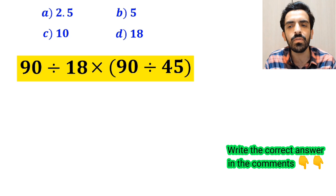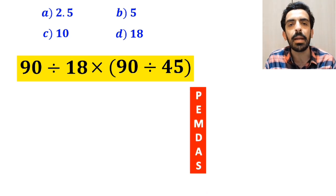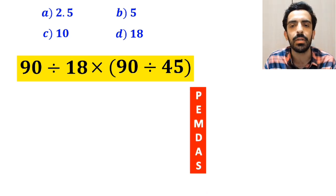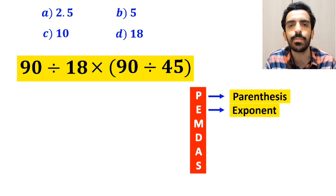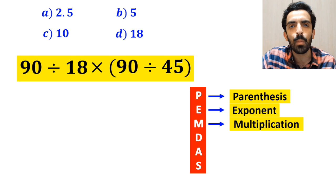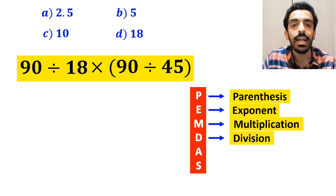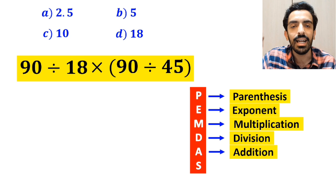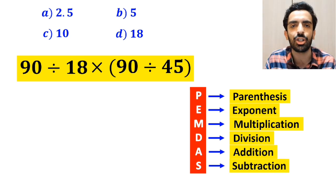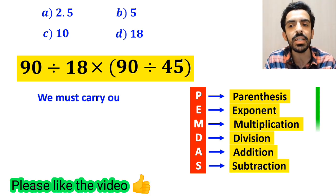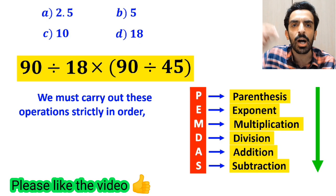To solve this question we need to follow the PEMDAS rule step by step. According to this rule, P stands for parenthesis, E stands for exponent, M stands for multiplication, D stands for division, A stands for addition, and S stands for subtraction. We must carry out these operations strictly in order from top to bottom.